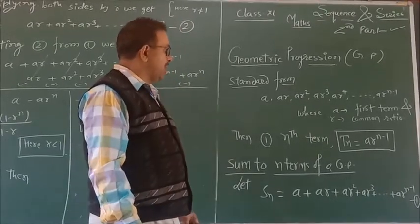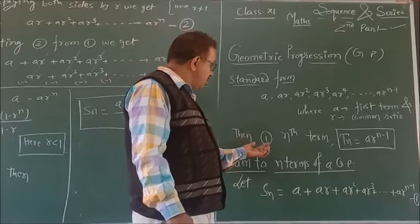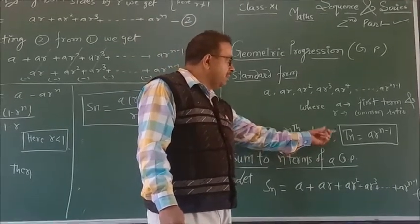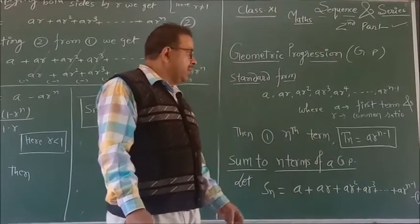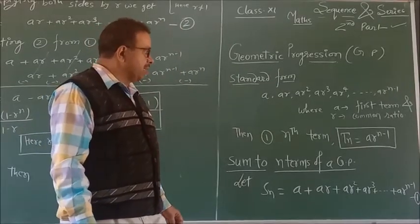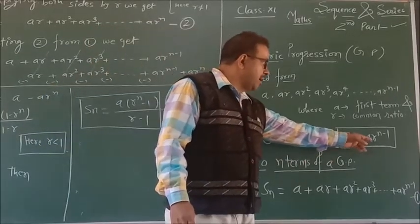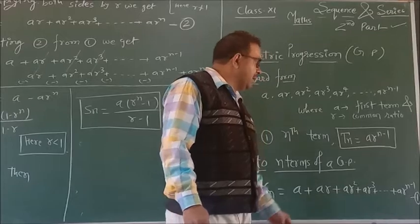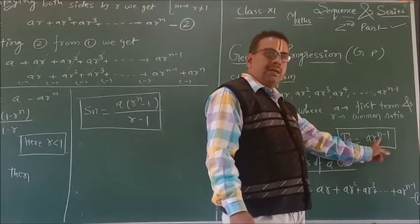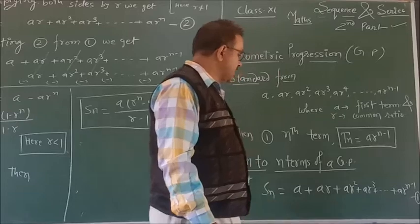The first formula for the nth term: t_n = ar^(n-1), where a is the first term, r is the common ratio, and n is the number of the term. This is the first equation. Now here comes the sum formula.